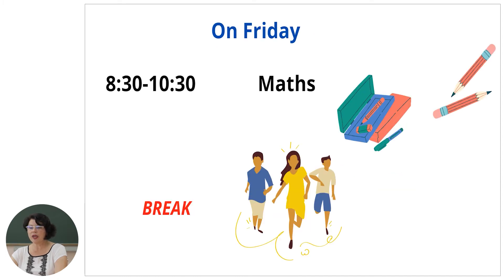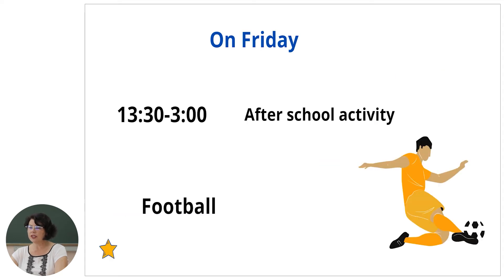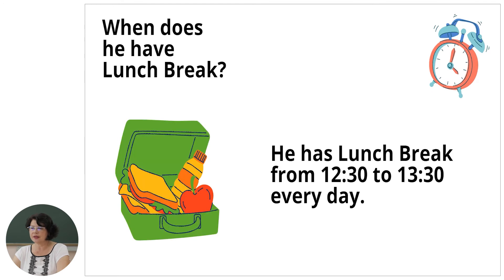On Friday from 8:30 to 10:30 he has math, then he has a break. From 11 o'clock to 12:30 he has English, then he has lunchtime. From 1:30 to 3 o'clock he has after school activity — football. When do lessons begin? Lessons begin at 8:30. When does he have lunch break? He has lunch break from 12:30 to 1:30 every day.